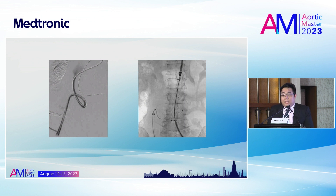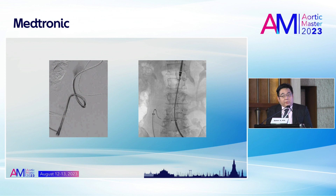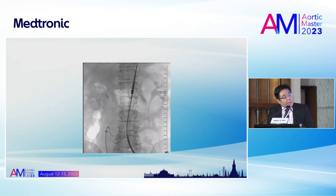After I deployed the main body, I tried to cannulate the contralateral limb, but I had a problem because the right iliac artery was very, very tortuous. I could not control the wire or catheter to cannulate the iliac artery. Since this was a rupture case, I tried to cannulate for about 5 to 10 minutes but could not advance the wire or achieve cannulation. I decided to convert from a bifurcated configuration to an aorto-uni-iliac device with fem-fem crossover.